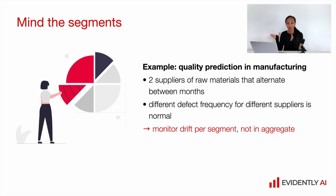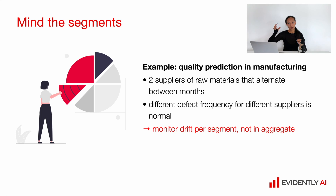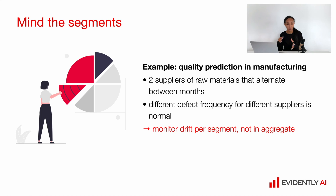Sometimes it's important to account for segments and measure drift not for the whole dataset but for individual segments. For example, in quality prediction in manufacturing such as steel production, you might use raw materials from different suppliers. If the share of materials from different suppliers changes a lot, you will detect data drift even though the data itself stays the same per supplier. The solution is to split the data by supplier and measure drift for each independently. If you see drift for a specific supplier, you can conclude that the quality of their raw materials or other properties has changed.